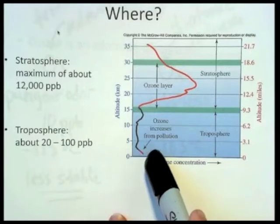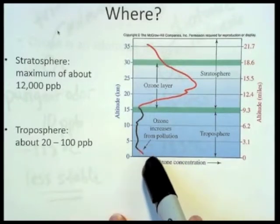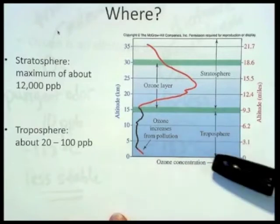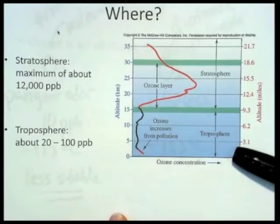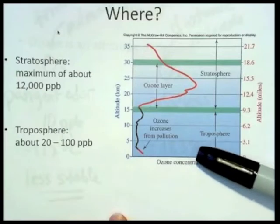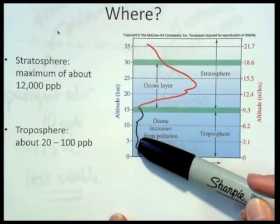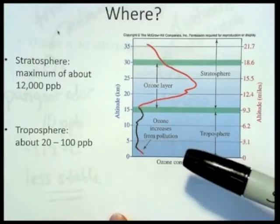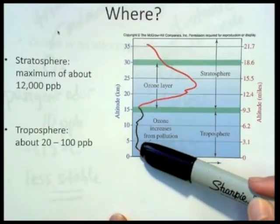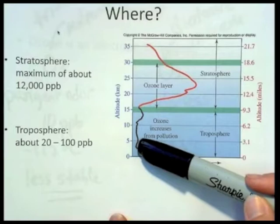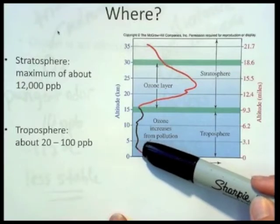We have this little red region right down here where it's a little higher. That is closer to ground level, less than a mile high. That's some of the highest places in the United States that go a mile high, like Denver, Colorado. That's where we would have the concentration red.